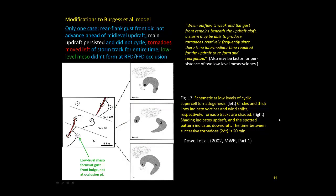Around the same time, David Dowell and others — I think Howie Bluestine was part of that — came out with a study on the McLean, Texas case from the first Vortex. They suggested modifications to Don Burgess's model. It's only one case, so it's hard to draw a conceptual model from it, but it was highly observed with aircraft, mesonet, and radar. They found that in this case, the rear flank gust front didn't actually advance ahead of the mid-level meso as in Burgess's model. They also noted that the low-level meso tends to form at the gust front bulge rather than the occlusion point. And the main mid-level updraft mesocyclone persisted and didn't go through recycling — even though you had low-level cycling, the main mid-level updraft continued to move northeast.